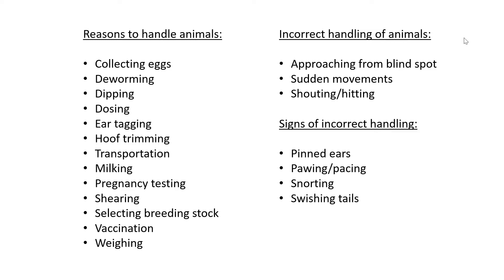Then for milking, cows have to be handled. For pregnancy testing — this is actually very important especially for stud breeders who want to know whether their best cows are pregnant, whether they've taken, and whether the bull is doing its job. Then also shearing of sheep requires physical handling. Then selecting breeding stock — sometimes we have to physically separate animals and put them in different camps. Also for vaccination and lastly for weighing.